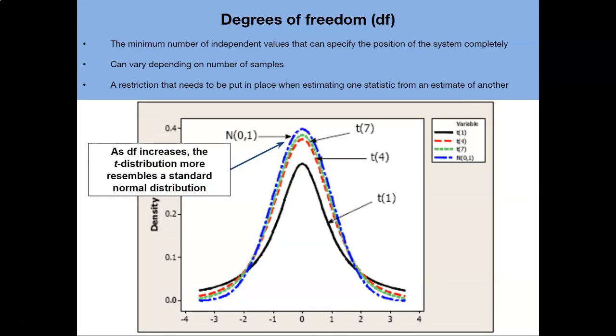Now a little bit more about degrees of freedom. This represents the minimum number of independent values that can specify some position of the system completely. Now all that means is that it varies depending on the number of samples. And so as the number of degrees of freedom increases the t distribution more resembles that of a standard normal distribution.